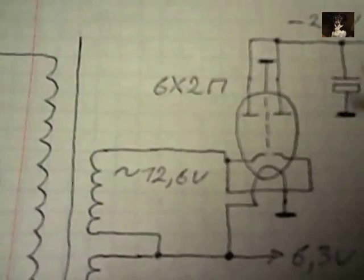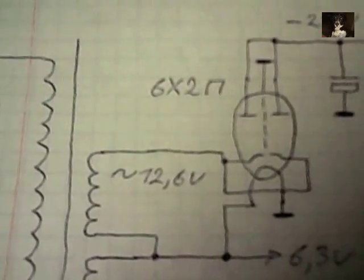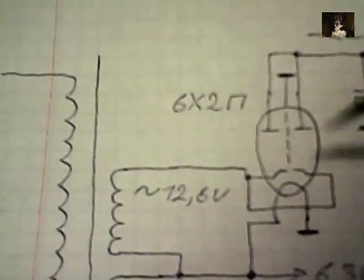Выпрямляется полупериод. Это низкая частота и может быть фон. Поэтому использовал лампу.